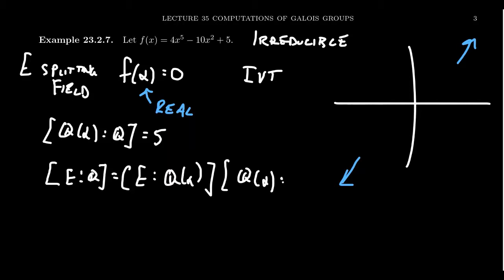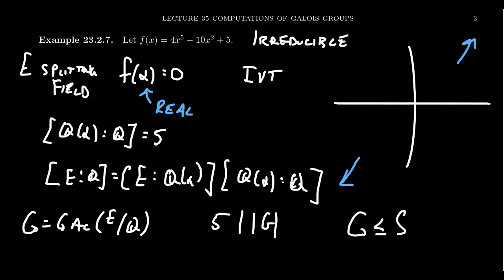Since this degree is five, this tells us that the Galois group, G equals the Galois group of e over Q, is divisible by five because of this observation. We also know that G can be visualized as a subgroup of S5.